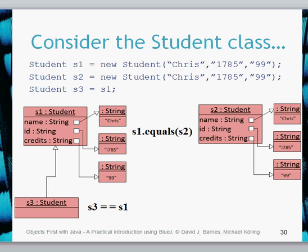In terms of reference equality, we use double-equals. Reference equality checks whether a particular variable is pointing to the exact same object. If we create S3 and set it equal to S1, then S3 == S1 returns true. However, S1 == S2 returns false because they are not the same object, even though S1.equals(S2) returns true. That is the difference between the dot equals method and the double-equals reference equality.